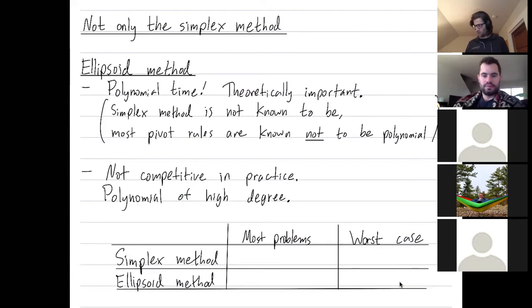For most problems, the simplex method is extremely fast. And the worst case for sort of artificially constructed examples that an enemy hands to you, it's exponentially bad. But this is sort of like 99% of problems, and this is at most 1%. So that's why the simplex method is so good on the vast majority of problems.